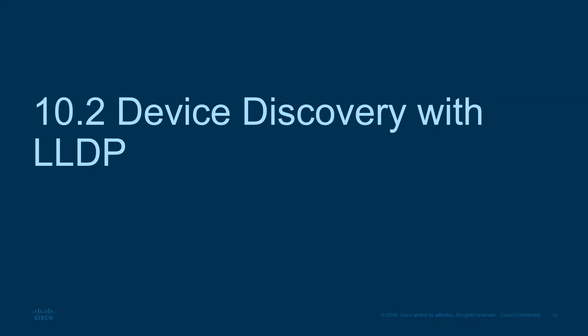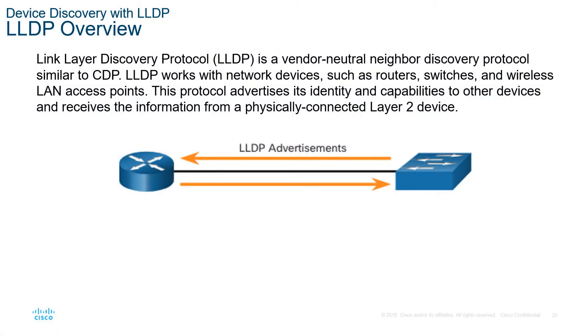Now let's discuss device discovery with LLDP. CDP is Cisco proprietary, so if you're using non-Cisco or hybrid devices on the network, we use LLDP — the Link Layer Discovery Protocol. LLDP is a vendor-neutral neighbor discovery protocol that works with routers, switches, and wireless LAN access points. It advertises identity and capabilities to other devices and receives information from physically connected Layer 2 devices.